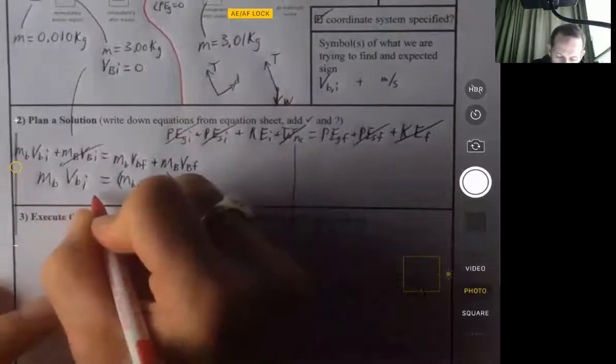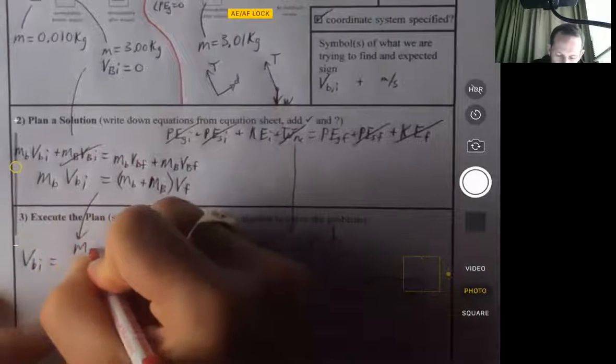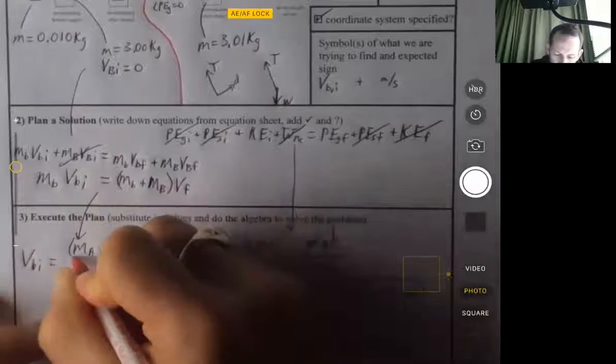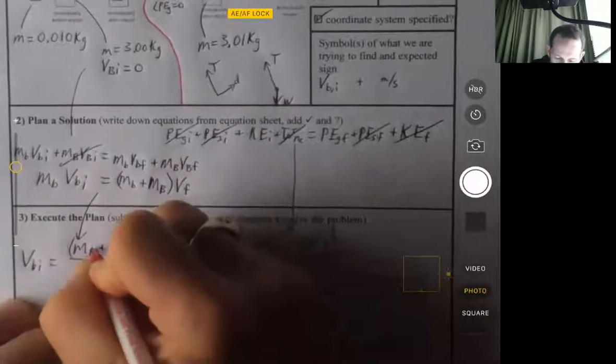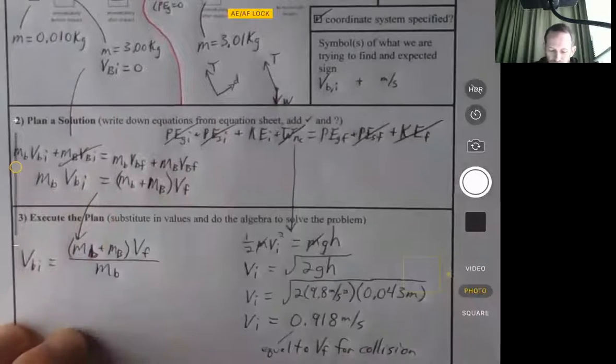So now I want to solve for V-B-I. Just divide both sides by the mass of the bullet. So lowercase b is bullet, capital B is block.